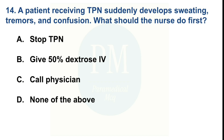A patient receiving TPN suddenly develops sweating, tremor, and confusion. What should the nurse do first? Option A: stop TPN. Option B: give 50% dextrose IV. Option C: call the physician. Option D: none of the above. The correct option is Option B — give 50% dextrose IV.